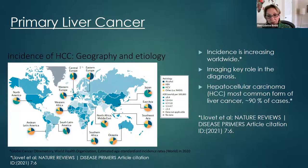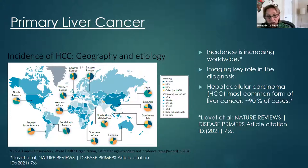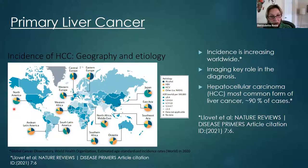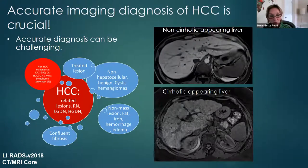A discussion of primary liver cancer remains important because the incidence is increasing worldwide. When we talk about liver cancer, we're mostly talking about hepatocellular carcinoma, which is by far the most common form, accounting for approximately 90% of cases. HCC is a global problem, but etiology varies by region. In North America and Japan, hepatitis C is the leading etiology, whereas in East Asia, hepatitis B is the leading etiology. Worldwide, non-alcoholic steatohepatitis is increasing. Identification of a liver mass on CT or MRI is a key component of HCC diagnosis.